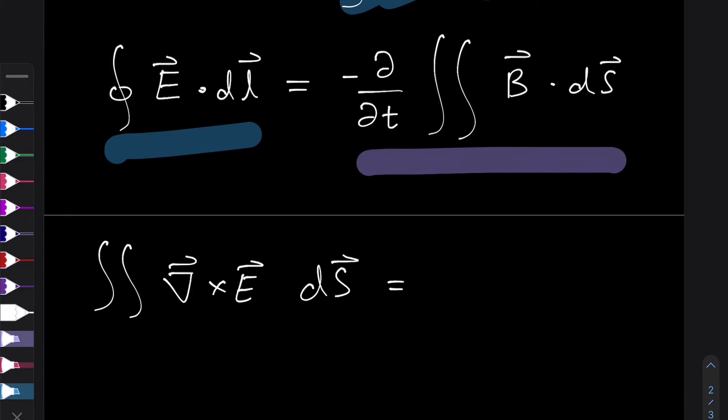we can do some hand wavy maths here and push the derivative into the integral. And this becomes the double integral of the negative rate of change of B dB/dt. And again dotted with dS. And this is meant to be a dot product too, because we're dotting a vector with another vector.